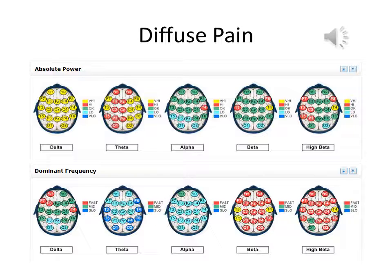Here is an example of diffuse physiological pain with a major focus on the back and leg. This client had previously had a mild stroke, and consequently had elevated diffuse delta and slowed alpha due to ongoing inflammatory cascades. The temporal theta varied with daily changes in pain.